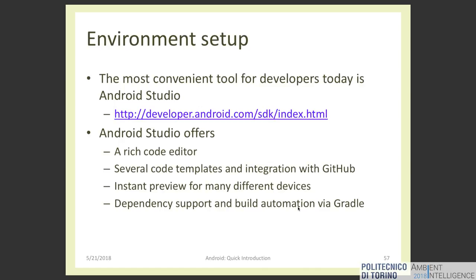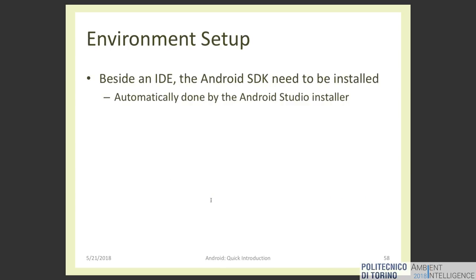You have the possibility to use emulators to preview your activities, and Android Studio automatically manages third-party libraries with Gradle. Gradle is a tool where you can specify the name of a library you want to use, and Gradle automatically downloads it — similar to how in Python you install a new module to use a custom library. By installing Android Studio you also install the Android SDK.